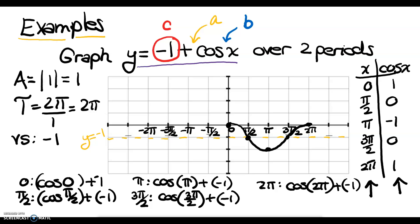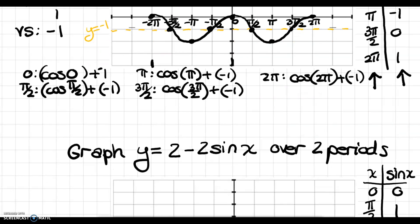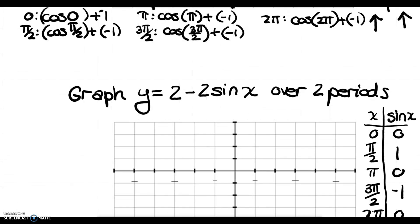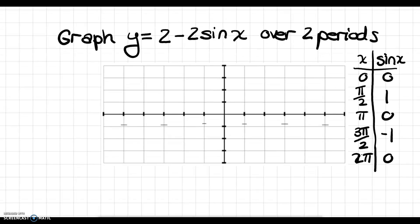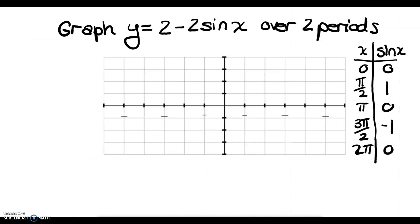I'll go ahead and duplicate those points for my second period and draw the graph over 2 periods. Now let's do one where I not only have a vertical shift, but also an amplitude change.